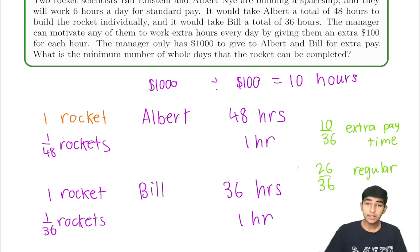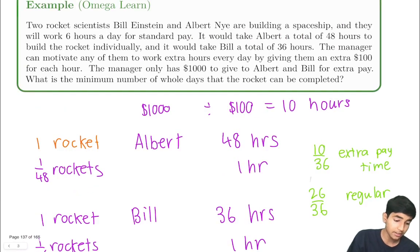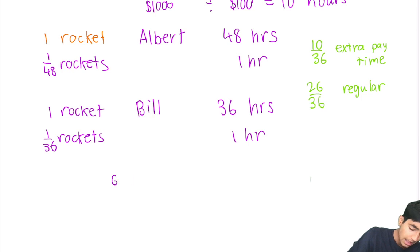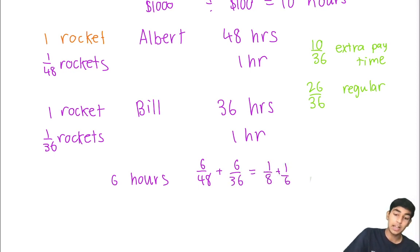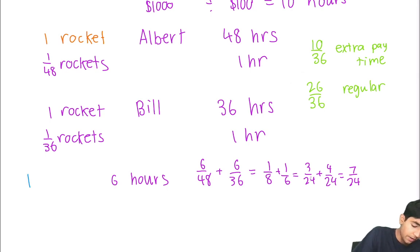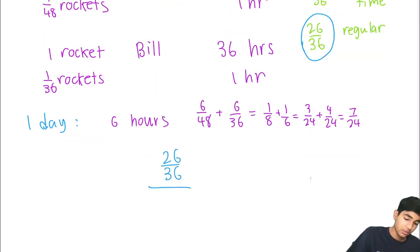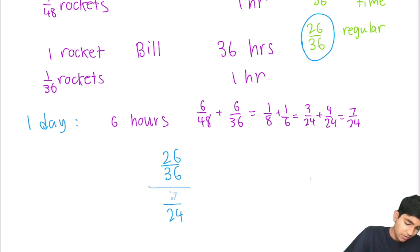So 26 over 36 must be built during regular pay hours, where they work 6 hours a day. In 6 hours, Albert can build 6 over 48 rockets and Bill 6 over 36 — that's 1 eighth plus 1 sixth, or 3 over 24 plus 4 over 24, which equals 7 over 24. So in one day working regular time, they can build 7 over 24 rockets. They need to build 26 over 36 in regular time, so the answer is 26 over 36 divided by 7 over 24.